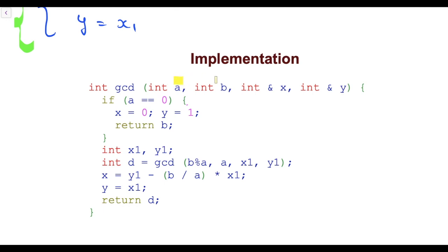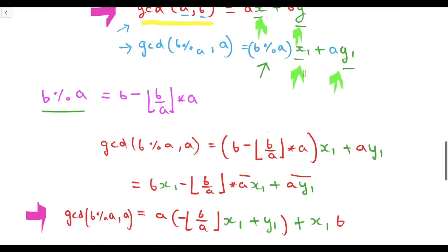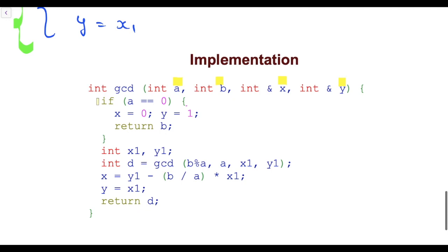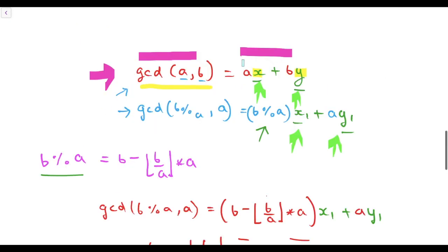Here we are finding the GCD of this A and B, and this x and y is the value of x and y that we want here. This is the base condition: when A is 0 it means that B is the GCD of A and B, and we will put here that x is 0 and y is 1 because when A is 0 then the GCD only becomes B.